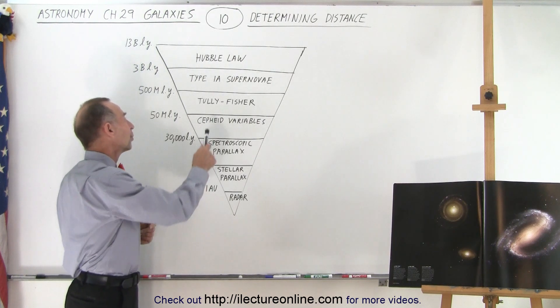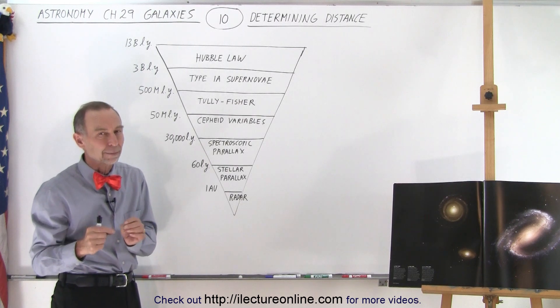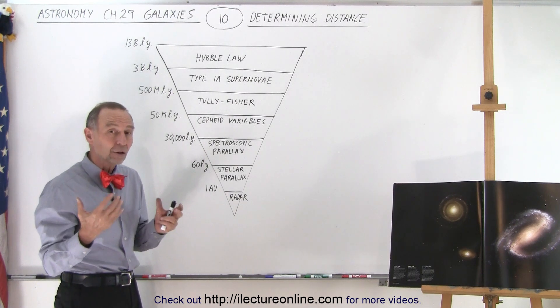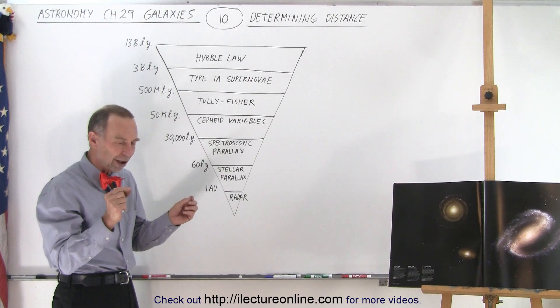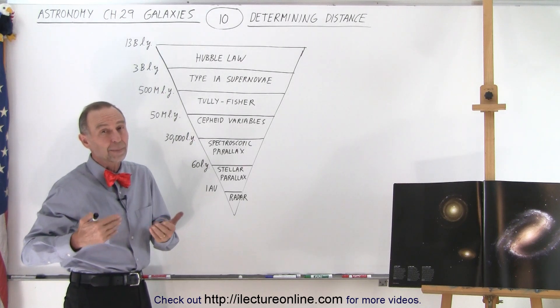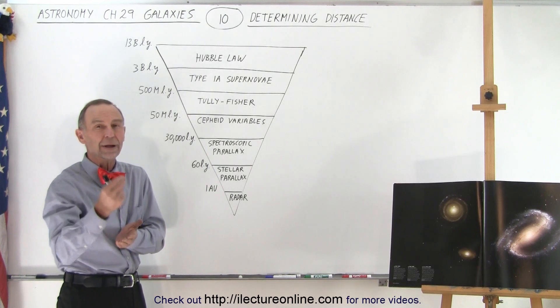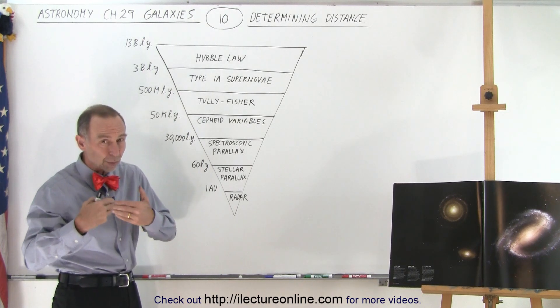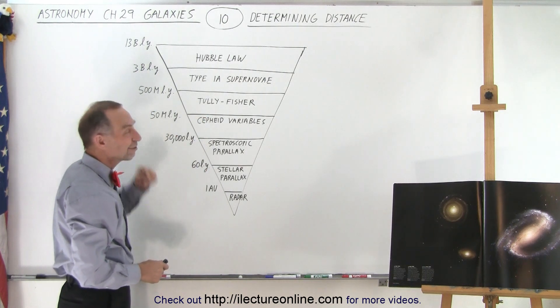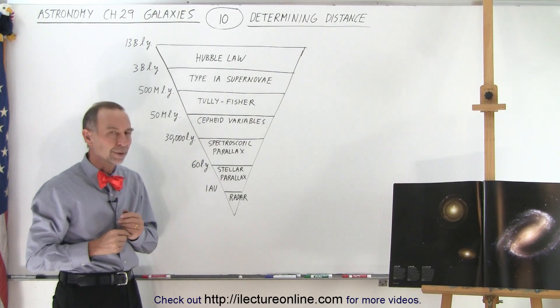The next method available to us is the Tully-Fisher method. It's not an exact method, but it's actually not bad. We discovered that the rate of rotation has a lot to do with the size of the galaxy. If we can measure how fast the galaxy rotates, we can infer the size. Size typically correlates with intrinsic brightness, so we measure the apparent brightness and make the calculation. This is a fairly good means of finding distance to galaxies out to about 500 million light years, beyond the capability of Cepheid variables.